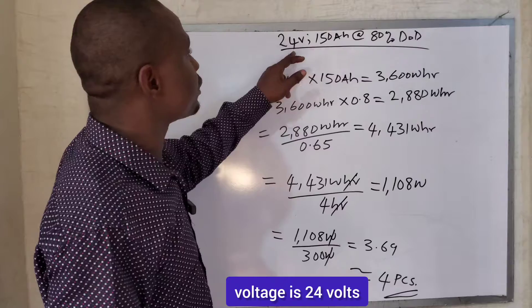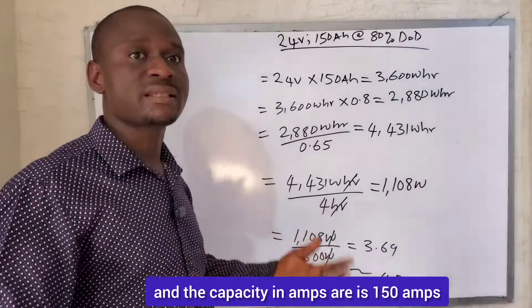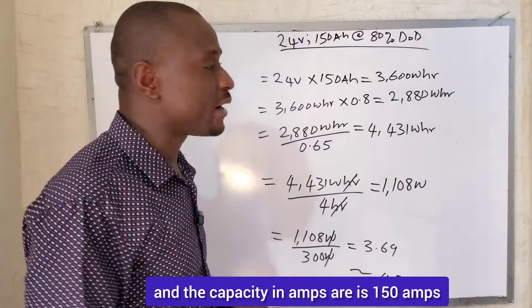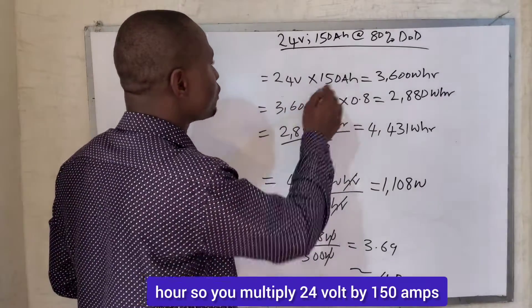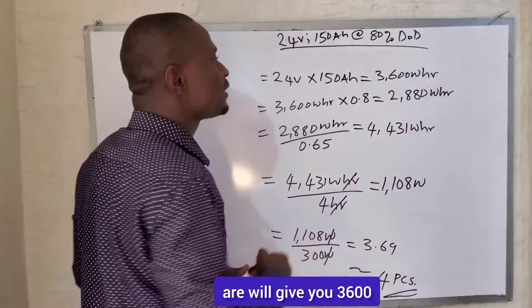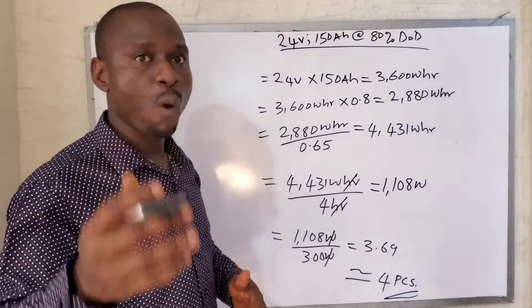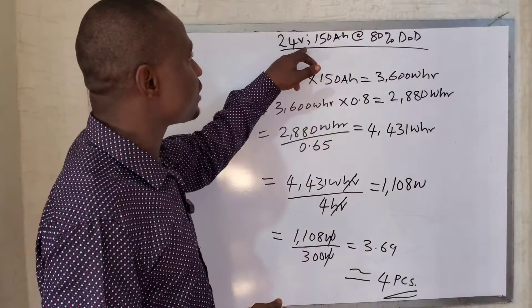The battery bank voltage is 24 volts and the capacity is 150 amp-hours. So you multiply 24 volts by 150 amp-hours, which will give you 3,600 watt-hours. This is the energy that is stored in this battery bank.